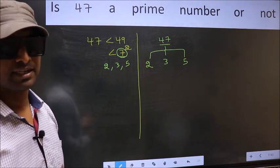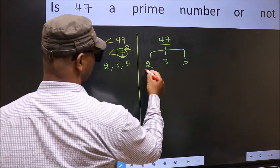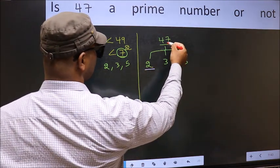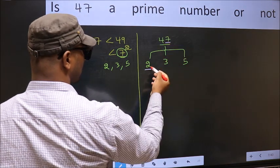Now, let us check the divisibility. Starting with 2. Last digit is 7, not even. Not divisible by 2.